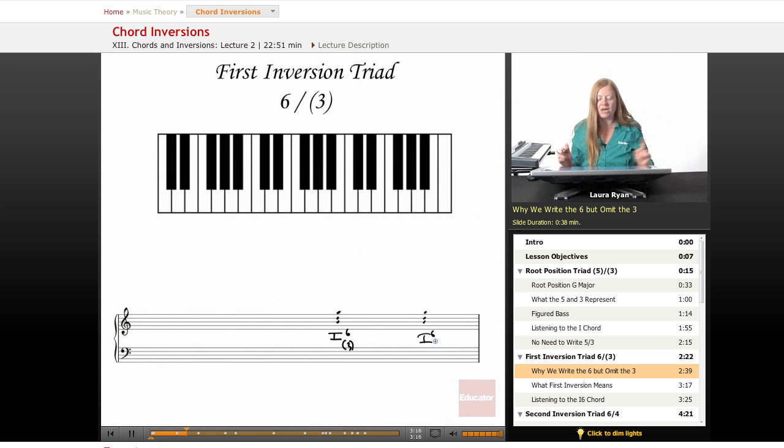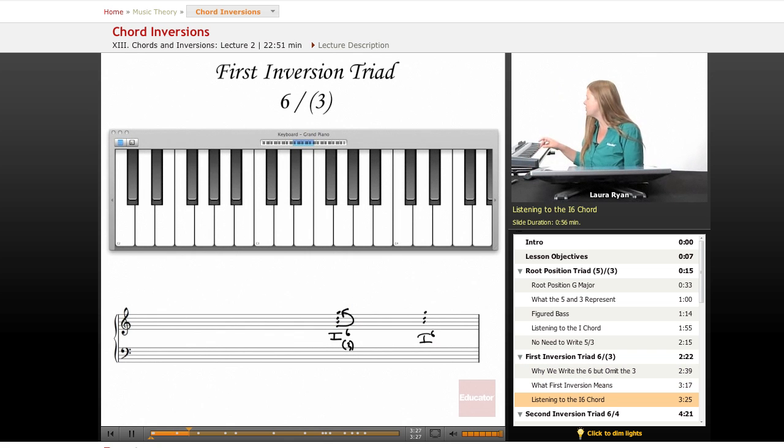This is the first inversion because we've taken the G and it's moved to the top. This is the first way you can invert the chord. Let's look at it. It makes a lot more sense to play it. So here's the root. We're taking this G and we're just putting it on the top. It's still a G. It's still a G major chord.